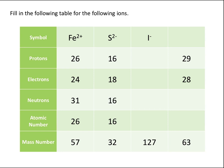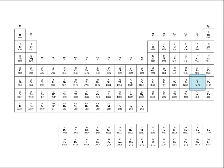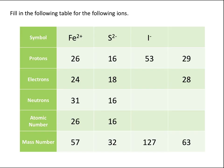Moving to the third column, I−: looking up iodine on the periodic table, we see that all atoms of iodine have 53 protons, which also means the atomic number is 53. Because our iodine ion has a charge of negative 1, it must have one more electron than protons, so it must have 54 electrons. To calculate the number of neutrons, we take the mass number, 127, minus the atomic number, or number of protons, which gives us 74 neutrons.